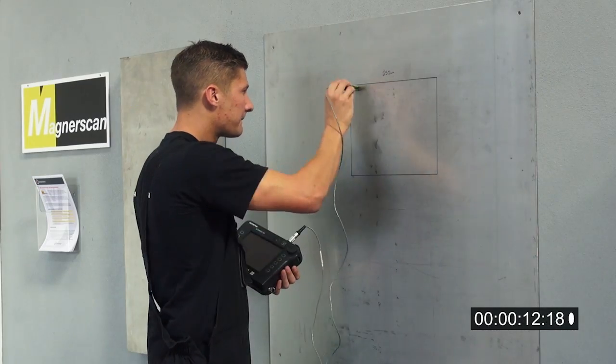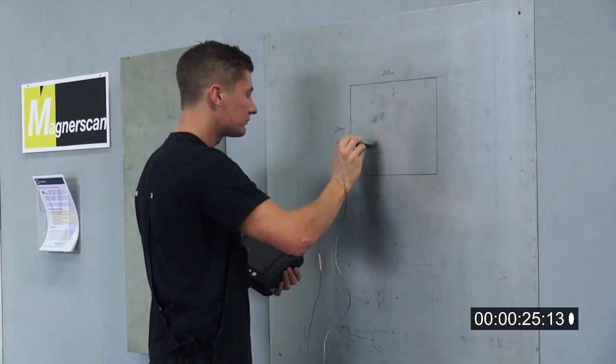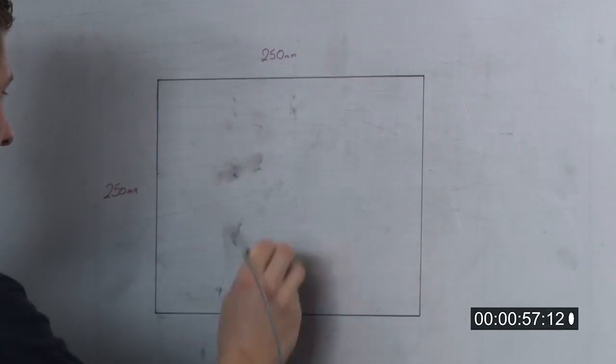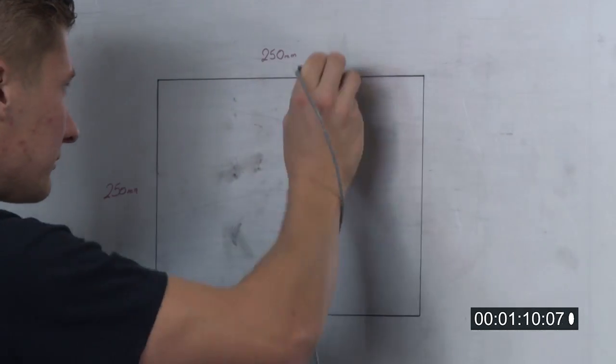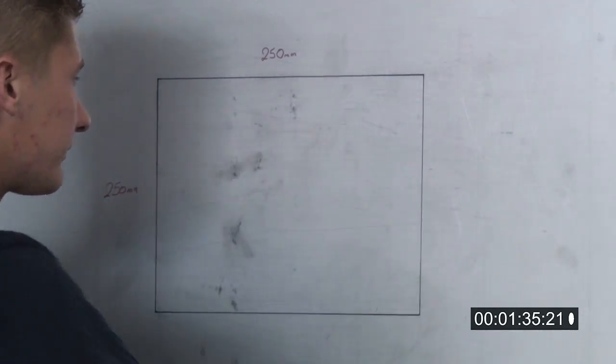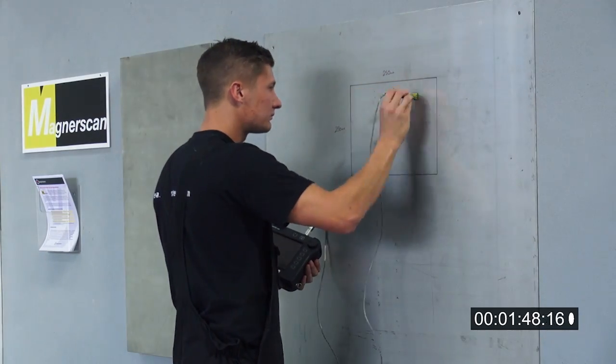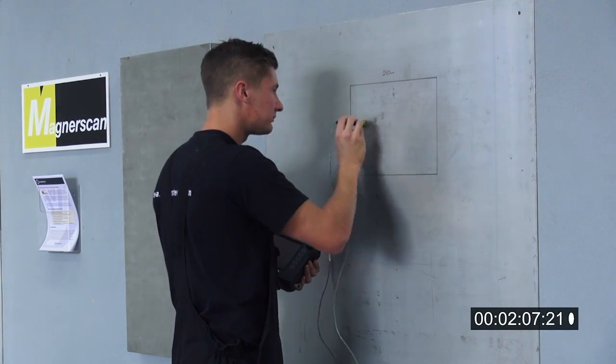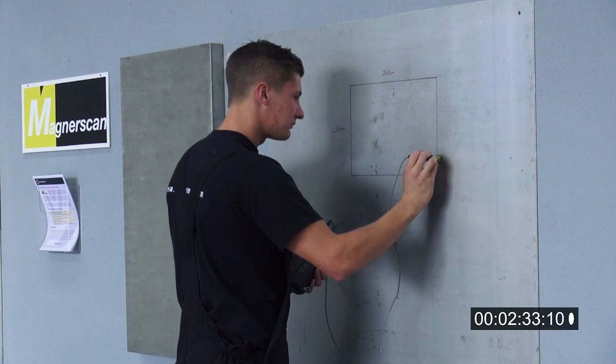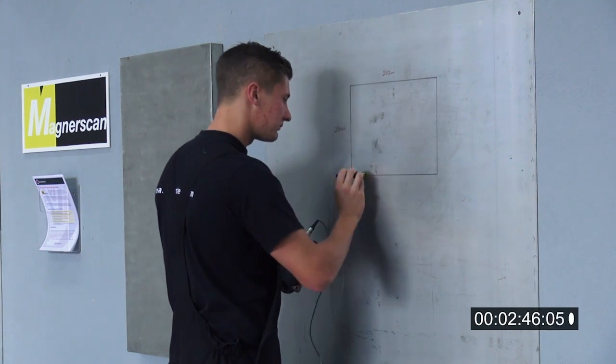Some companies claim they can test large stainless steel surfaces with eddy currents. Just look how long it takes for this small area. As you can see, this method is very time consuming, which makes it impossible to scan large vessels. The use of eddy currents inevitably leads to corners being cut and defects being missed.